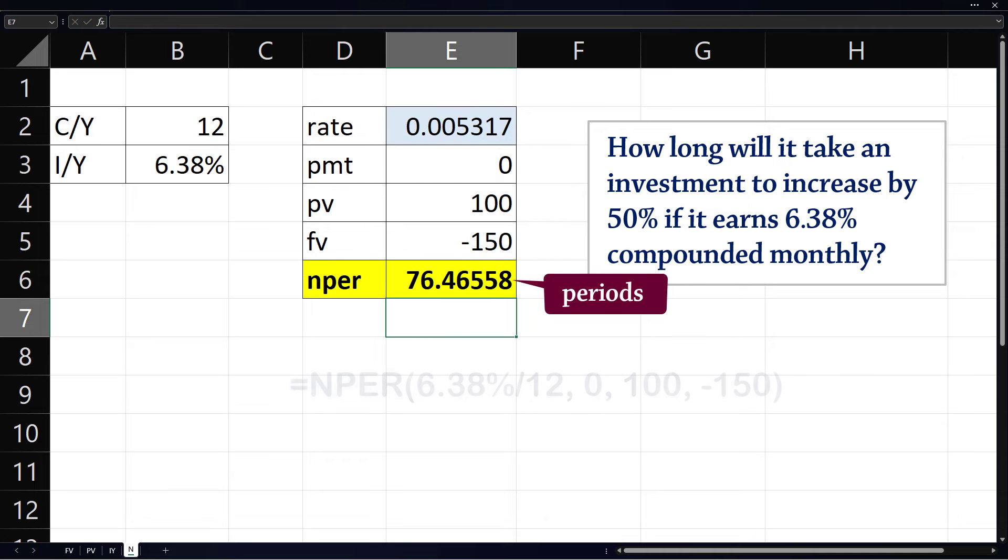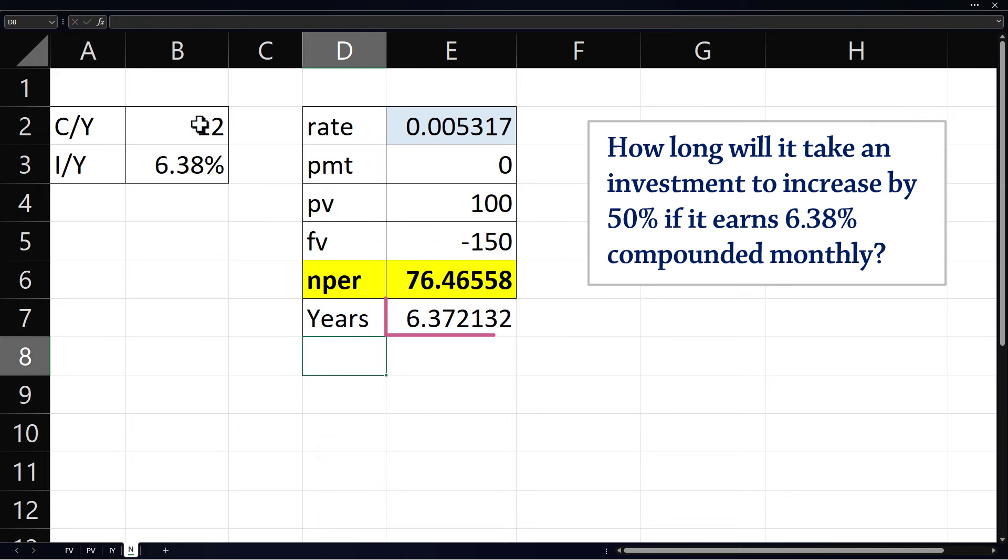So this is the number of periods. If we want this in years, we divide N by the compounding frequency CY. And this is it in years.